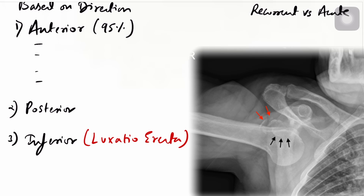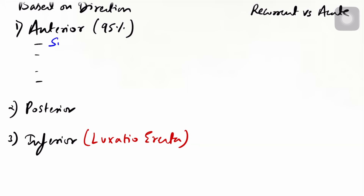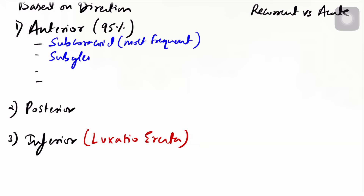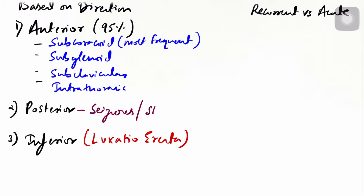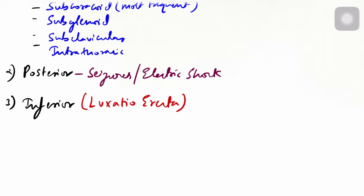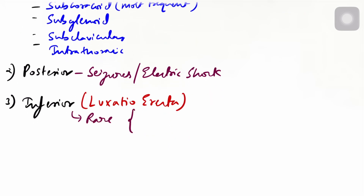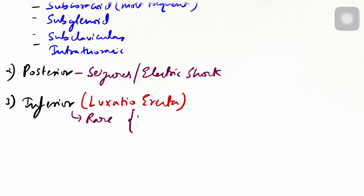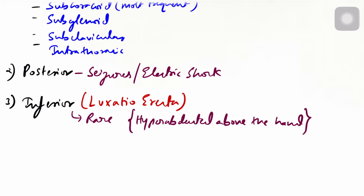Within anterior dislocation, subdivisions include subcoracoid (most frequent), subglenoid, subclavicular, and intrathoracic. Posterior dislocation is less common and is seen in seizure patients or electric shock patients. Inferior dislocation is very rare and occurs when the arm is hyper-abducted above the head.